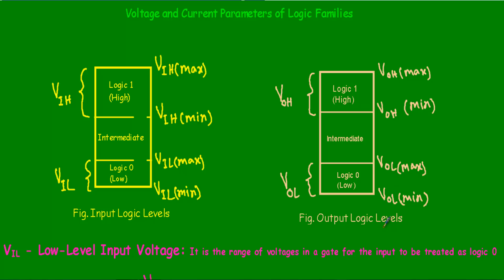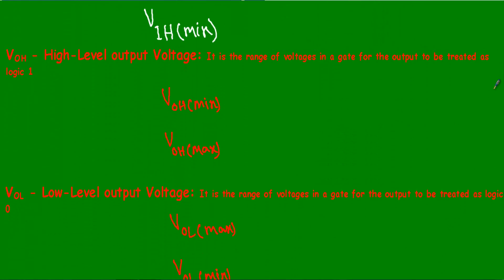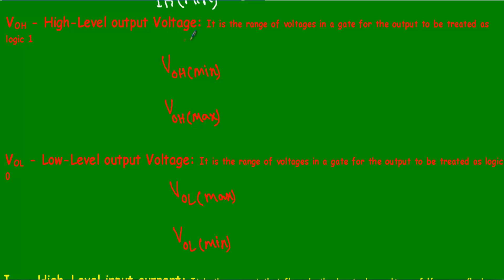When we talk about output logic levels, the voltage range used to indicate logic 1 is denoted as VOH — voltage when output is high. We don't apply a fixed voltage; rather we use a range of voltages denoted as VOH. Any voltage within this range will be treated as logic 1, with maximum value VOH max and minimum value VOH min. VOH is the range of voltages in a gate for the output to be treated as logic 1.